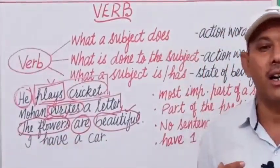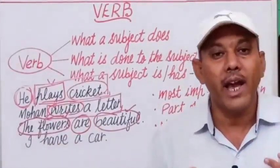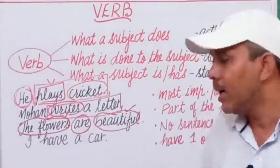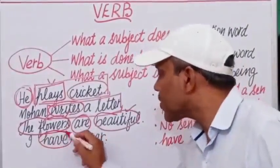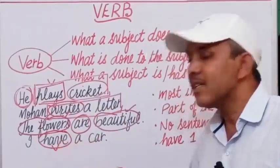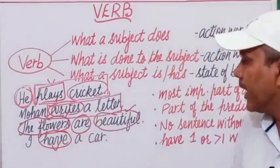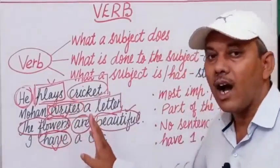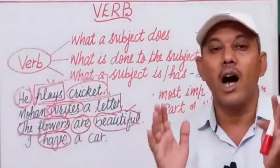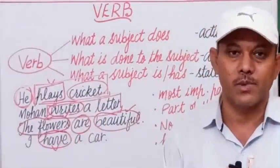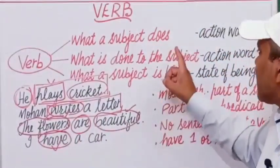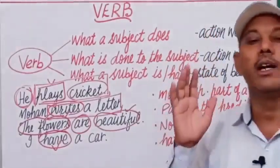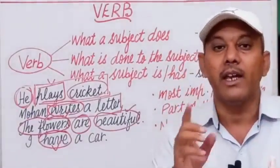'I have a car' — it tells us about possession. Again, 'have' is a verb. So plays, rides, are, have — these are all verbs. Verbs are action words or words expressing state of being in a sentence.